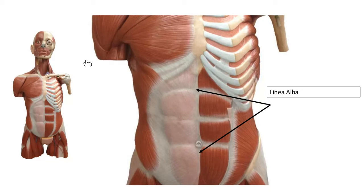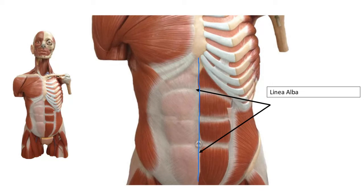Some of the muscles we talked about today we'll see in our labeling exercise. The linea alba is not a muscle — it's an anatomical structure found at the midline. If you drop a plumb line from the xiphoid process down to the pubic symphysis, that line goes right down the linea alba. Ladies, if you've ever been pregnant, you may have noticed this area became darker — called the linea nigrans — because melanocytes become more active during pregnancy, depositing melanin along that line.